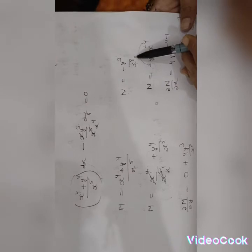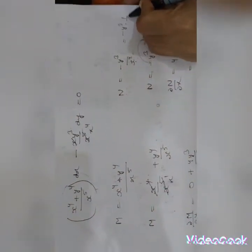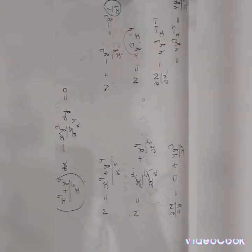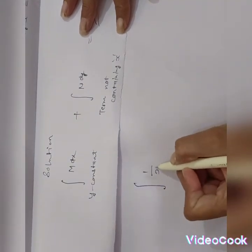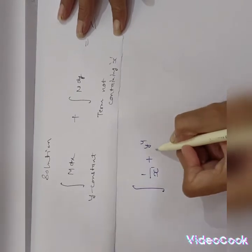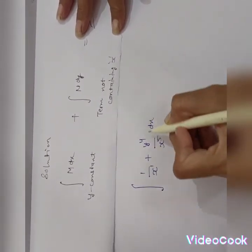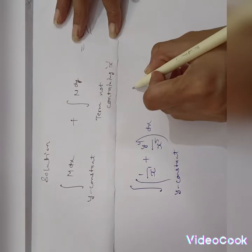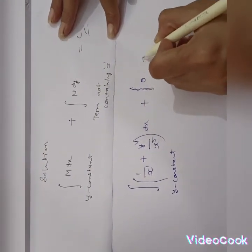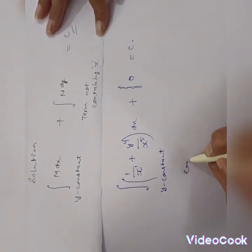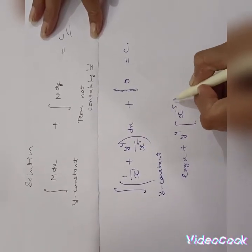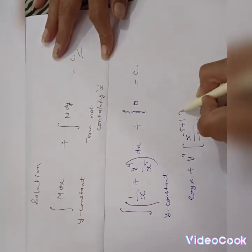For the N term, –y³/x⁴, there is no term not containing x, so that part contributes zero. Integrating M = 1/x + y⁴/x⁵ with respect to x: integral of 1/x gives log x; integral of y⁴·x⁻⁵ gives y⁴·x⁻⁴/(–4) = –y⁴/(4x⁴). The solution is: log x – y⁴/(4x⁴) = C.